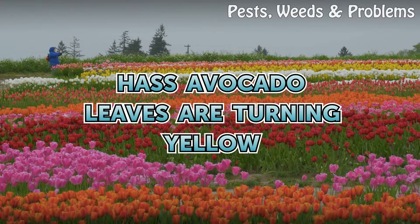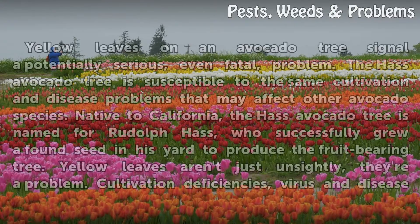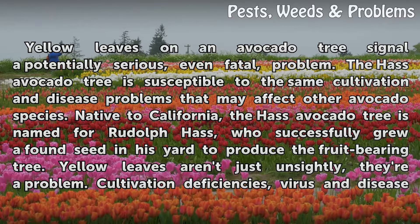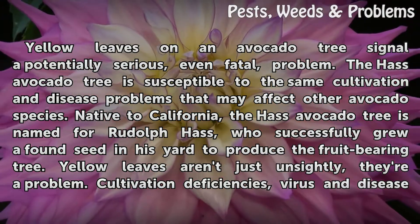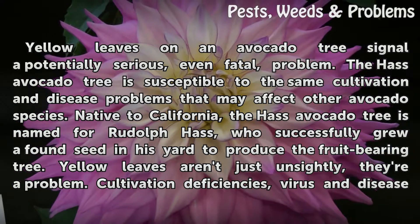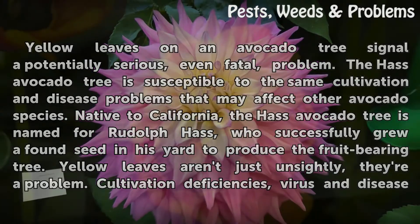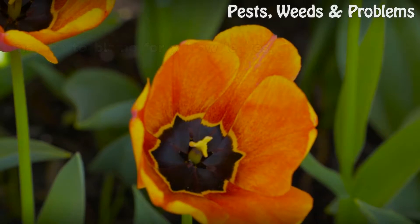Hass avocado leaves are turning yellow. Yellow leaves on an avocado tree signal a potentially serious, even fatal, problem. The Hass avocado tree is susceptible to the same cultivation and disease problems that may affect other avocado species. Native to California, the Hass avocado tree is named for Rudolph Hass, who successfully grew a found seed in his yard to produce the fruit-bearing tree. Yellow leaves aren't just unsightly — they're a problem. Cultivation deficiencies, virus, and disease may be to blame for yellow leaves.